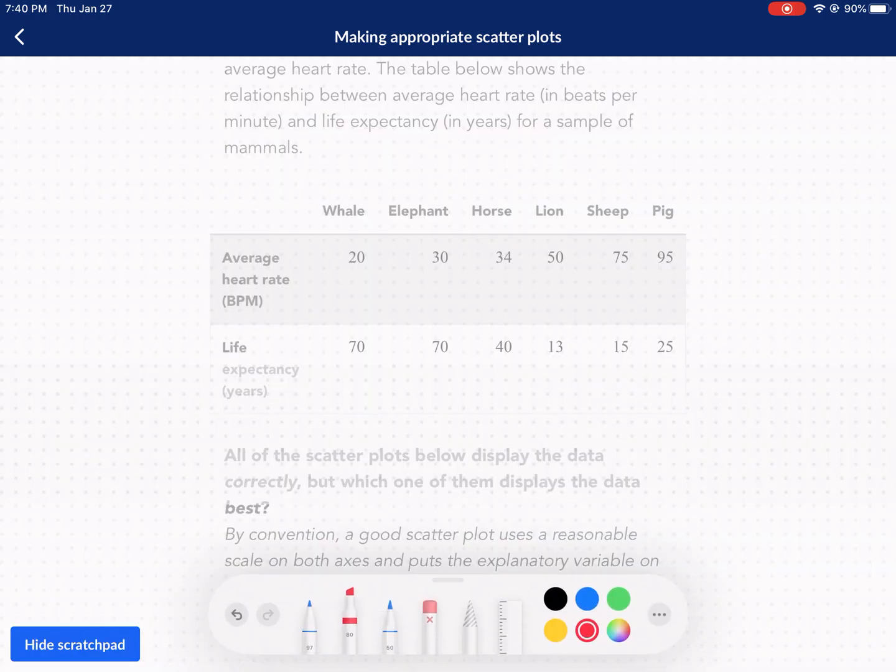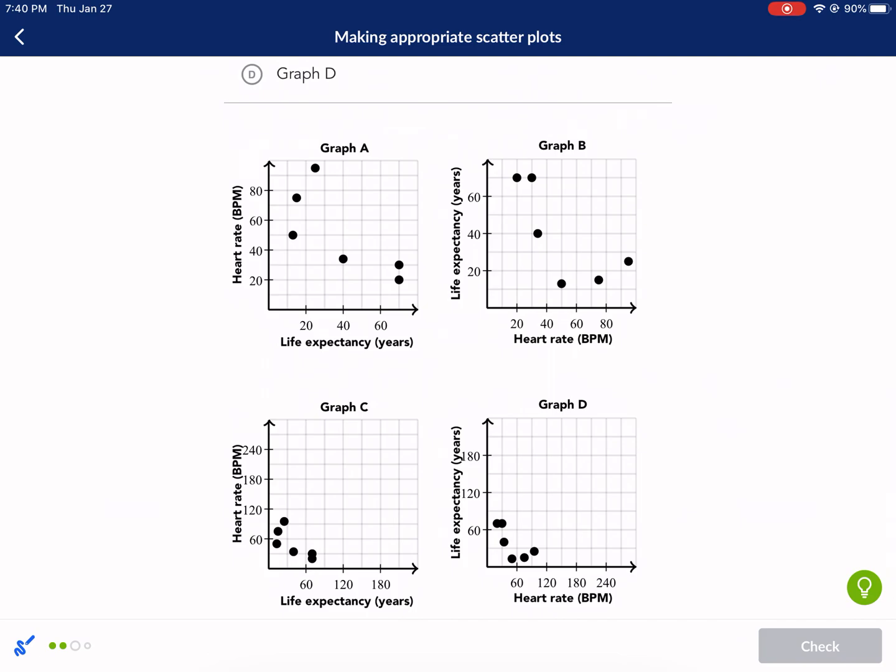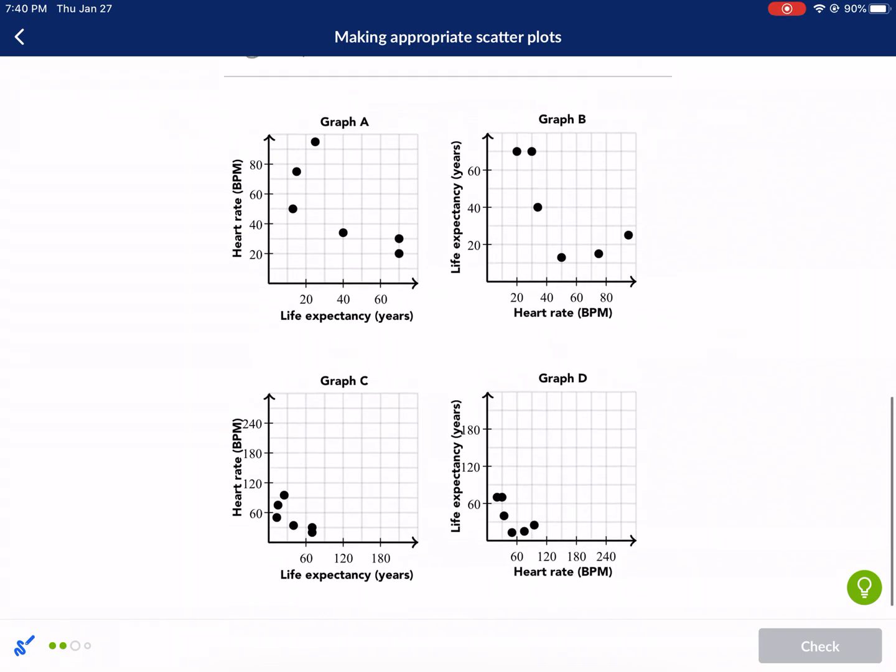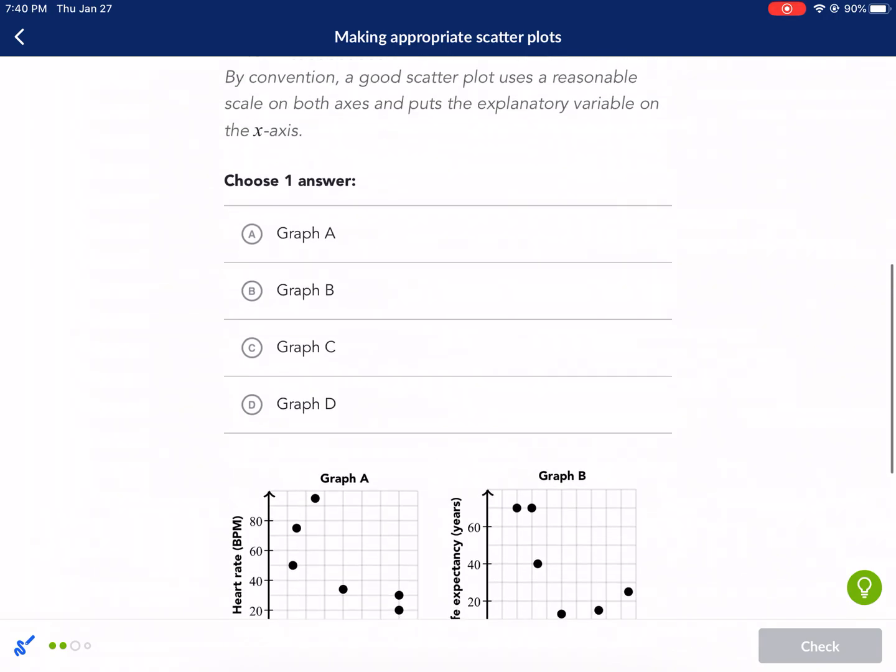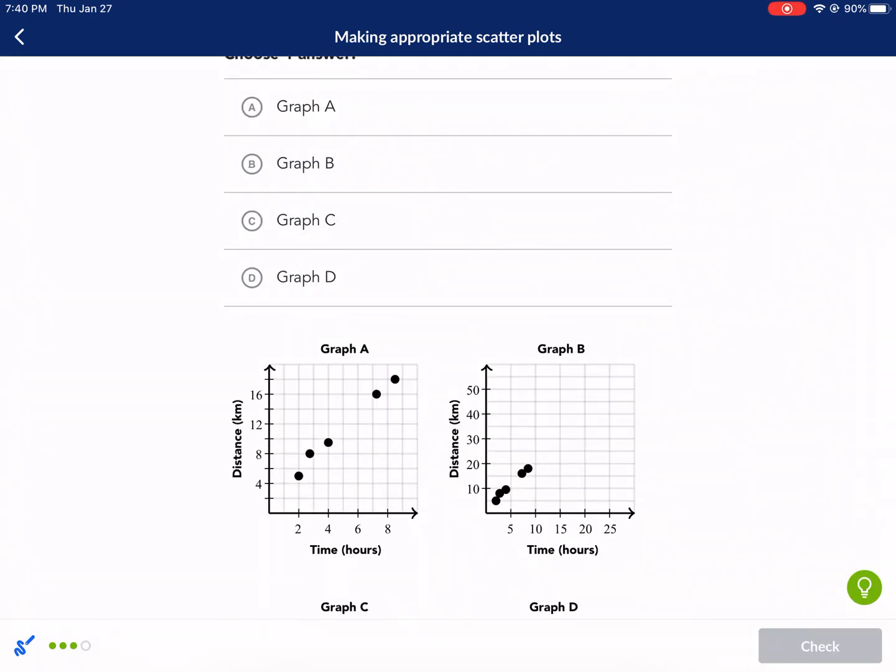So obviously one thing that's not really dependent upon the other one - average heart rate, that's going to happen no matter what. It's not like, oh, I'm going to die in 70 years, I better slow down my heart. You can't do that. So this one is dependent upon the average heart rate. So we want to make sure the average heart rate is at the bottom. So that eliminates A and C. And then we'll look for one that's not so compressed. So graph B looks like the one for us. Clearly that's a more appropriate x-axis limits with the number line. So that's going to be our choice.